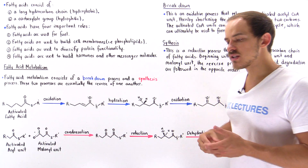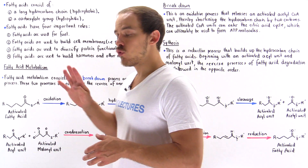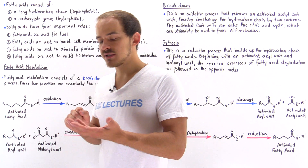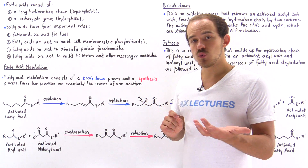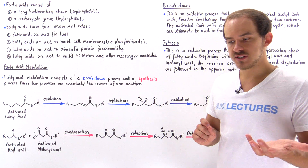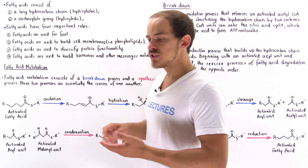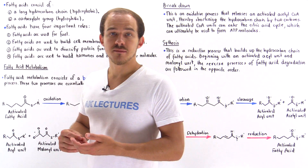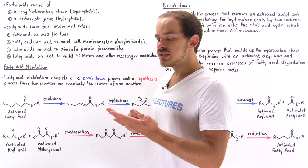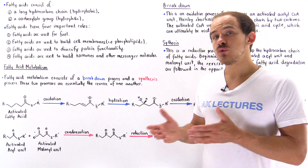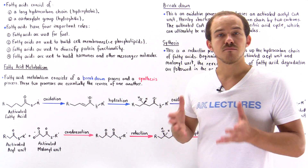So what do our cells use fatty acids for? Fatty acids have four important functions inside our cells. Number one: fatty acids are fuel molecules, and as we'll shortly see, our cells can break down fatty acids to actually generate high-energy ATP molecules.